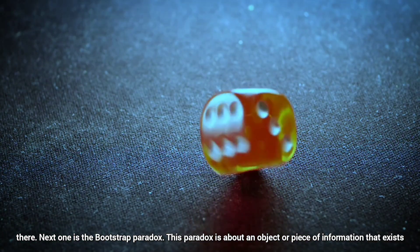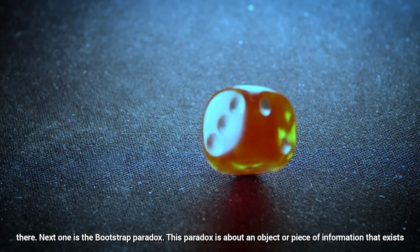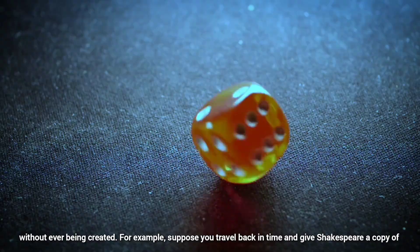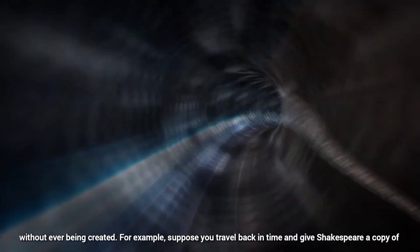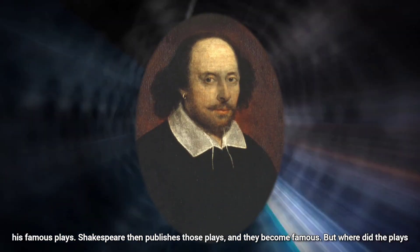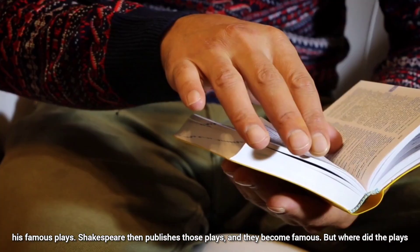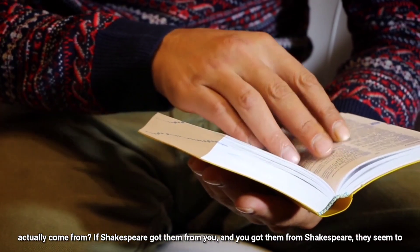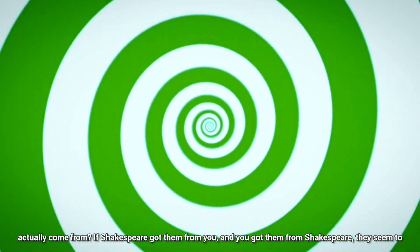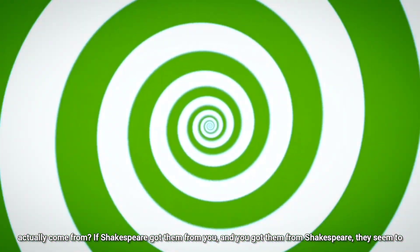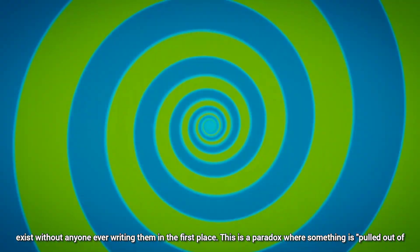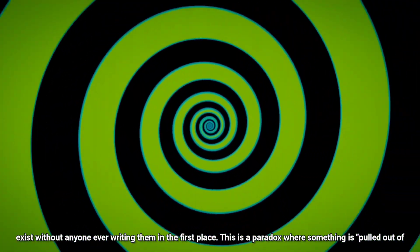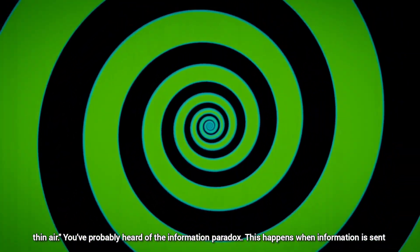This paradox is about an object or piece of information that exists without ever being created. For example, suppose you travel back in time and give Shakespeare a copy of his famous plays. Shakespeare then publishes those plays and they become famous. But where did the plays actually come from? If Shakespeare got them from you and you got them from Shakespeare, they seem to exist without anyone ever writing them in the first place. This is a paradox where something is pulled out of thin air.